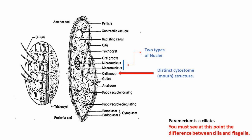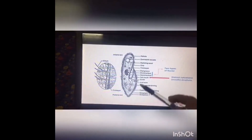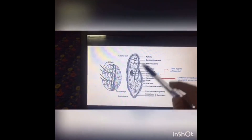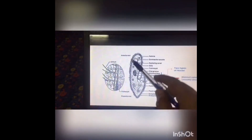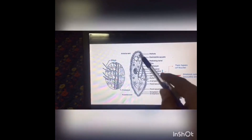First of all, we want to see who represents Ciliophora — it is Paramecium. You can see that its full body is surrounded by cilia. The second feature visible in the diagram is the presence of the pellicle, which provides support to the body.